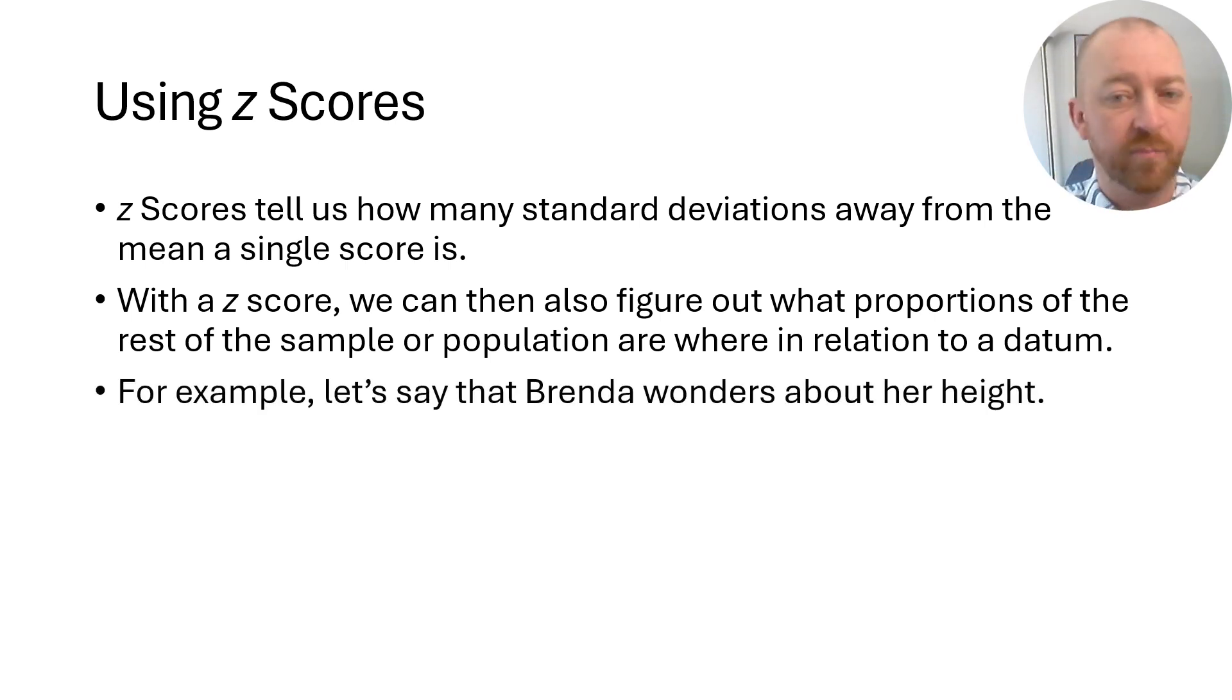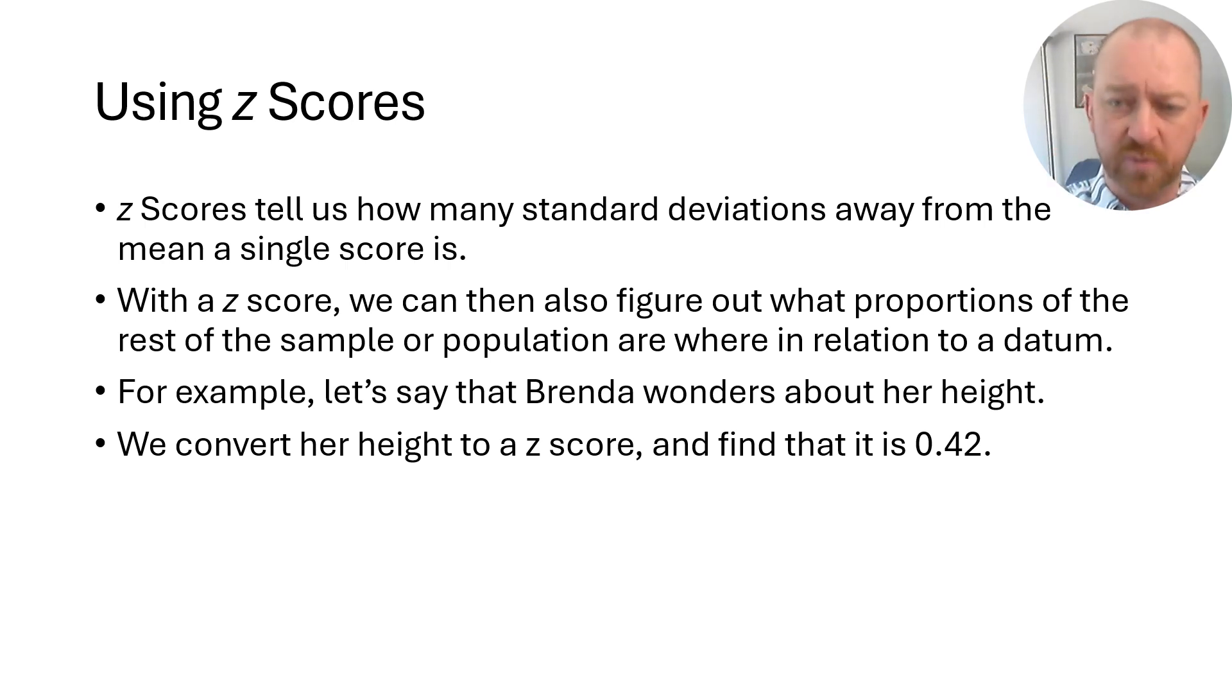Let's start off with an example of Brenda. Let's just take an imaginary person named Brenda, and she wonders about her height. Is she tall for her population? We can convert her height into a z-score. We've taken her actual height, subtracted the mean height for females in the United States, and then divided that by the standard deviation of females in the United States in terms of height. We find that her height turns out to have a z-score of 0.42.